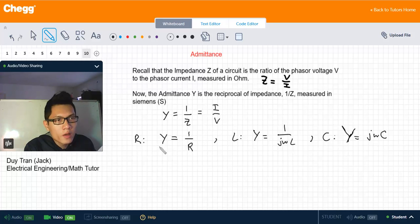The admittance Y of an element of a circuit is the ratio of the phasor current through it to the phasor voltage across it.